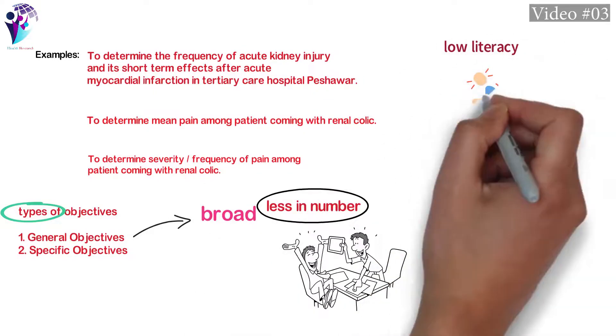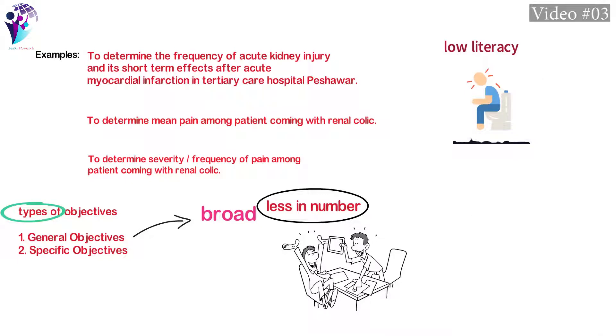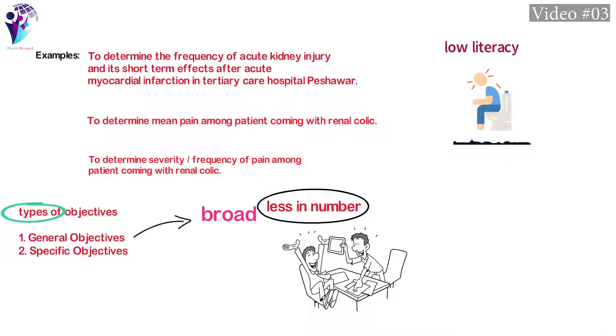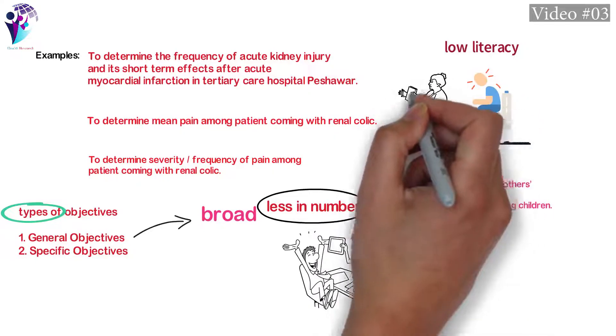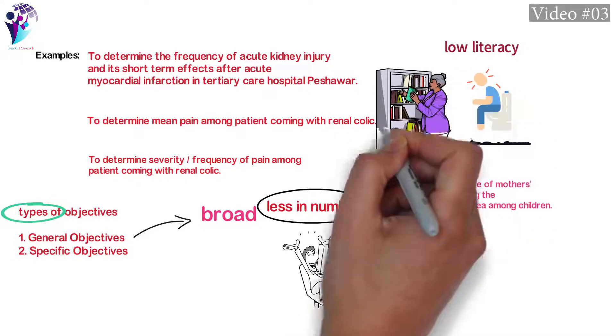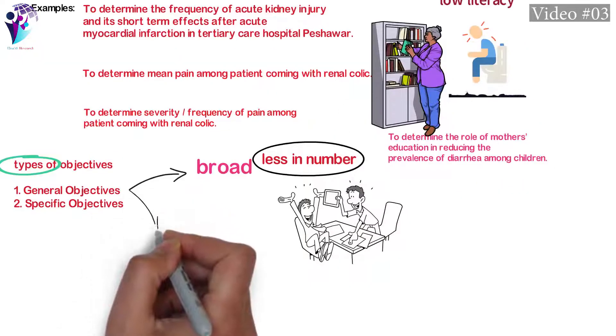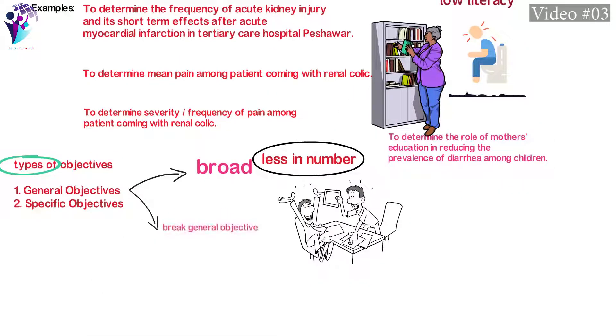For example, if the problem identified is low literacy among mothers of children with diarrhea, the general objective should be: to determine the role of mothers' education in reducing the prevalence of diarrhea among children.